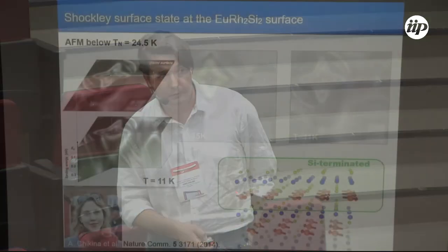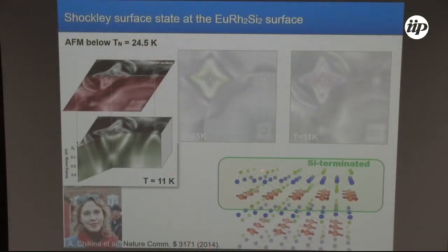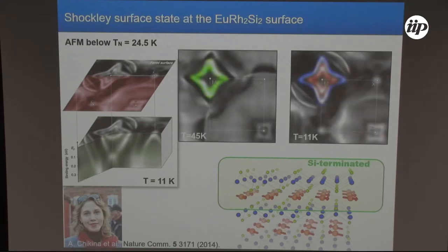At this point our research turned to the surface state, which we believe is interesting and exotic. We will be working with the top four layers of the material: we have a silicon termination, then a rhodium-silicon layer, and then the magnetically active europium layer lying four layers below the surface — this is the essential part for the surface state. Measurements performed at high temperature in the paramagnetic phase and in the ordered phase show the splitting can be nicely detected.